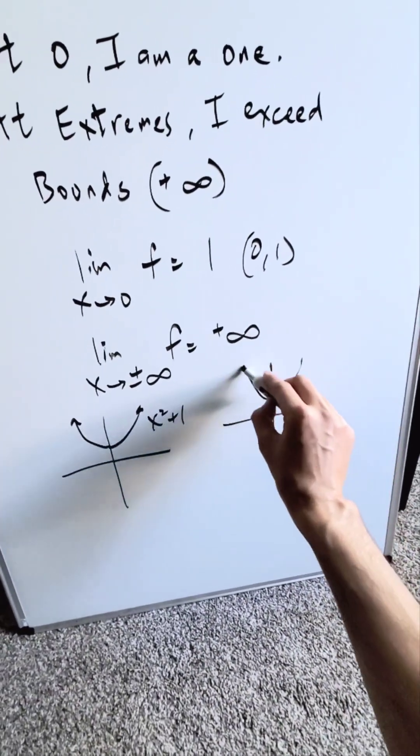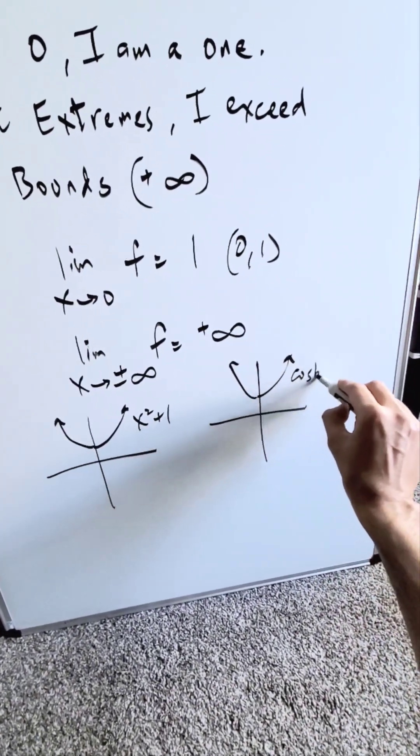How about this one, your hyperbolic cosine function, which looks something like that. Also the same y-intercept.